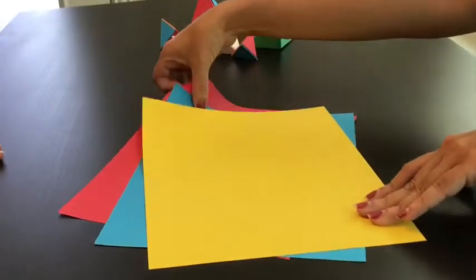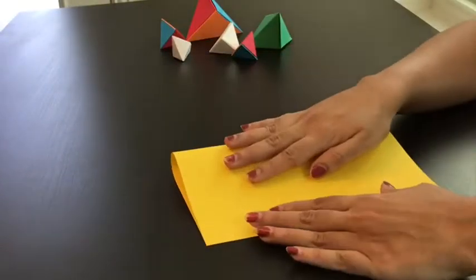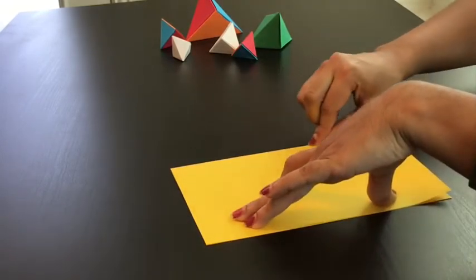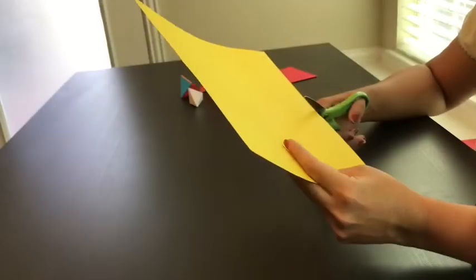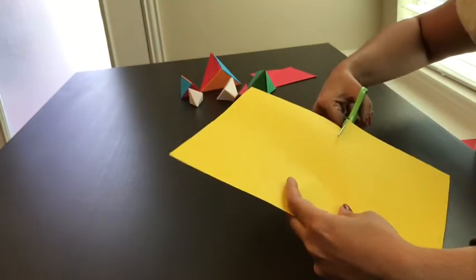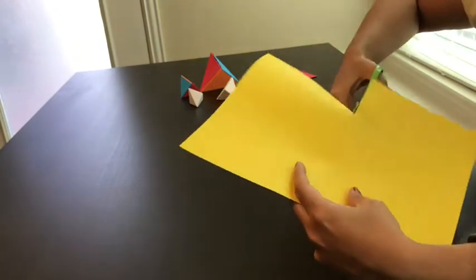We started by cutting the printer paper in half, because otherwise we get pretty big boxes. And if you do want large boxes, it's best to use cardstock because that'll make it more sturdy. But since we only want to put small things into our box, we're cutting it in half.